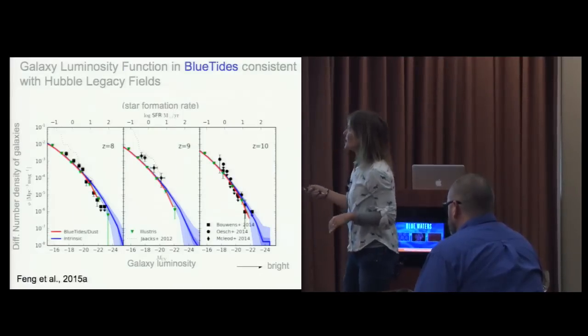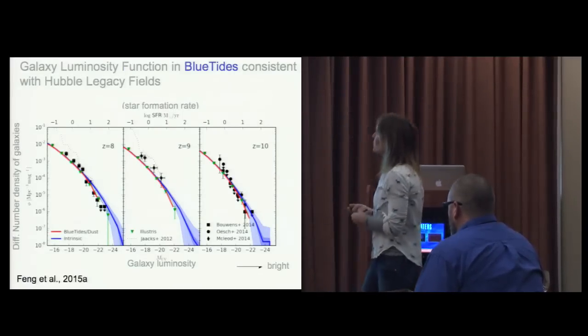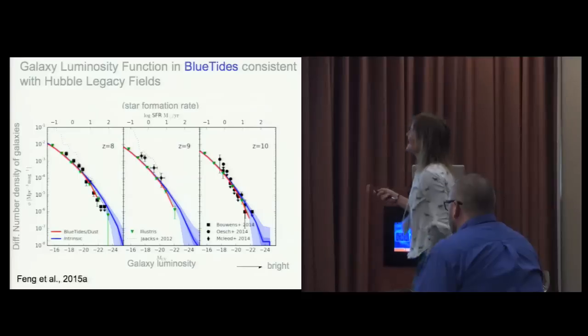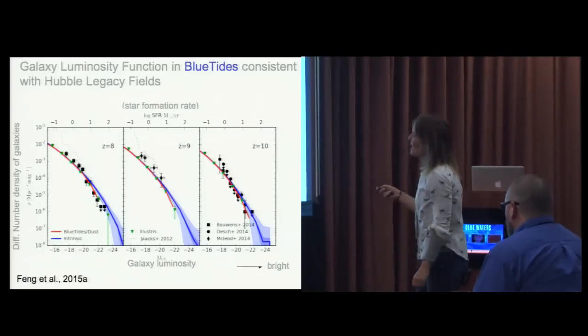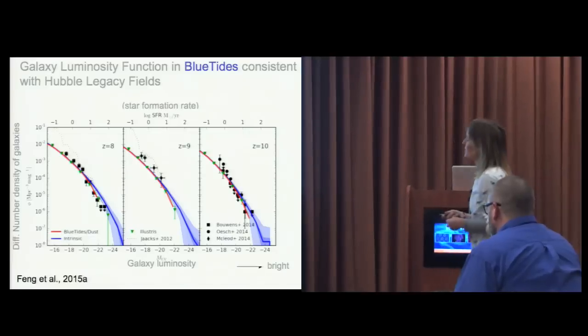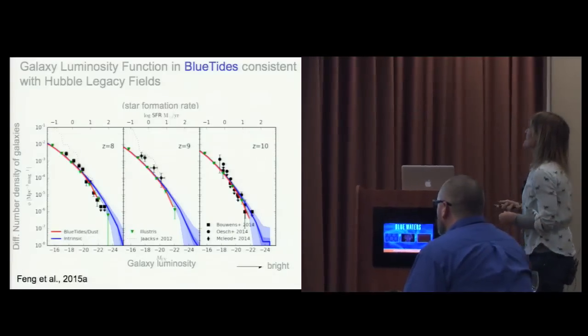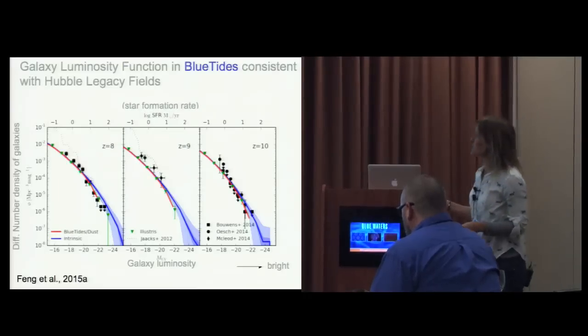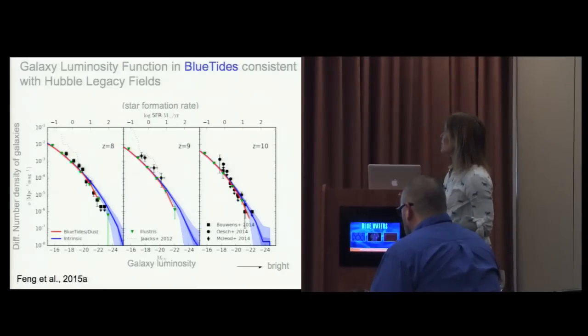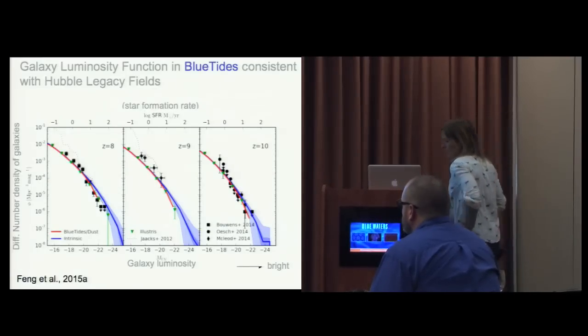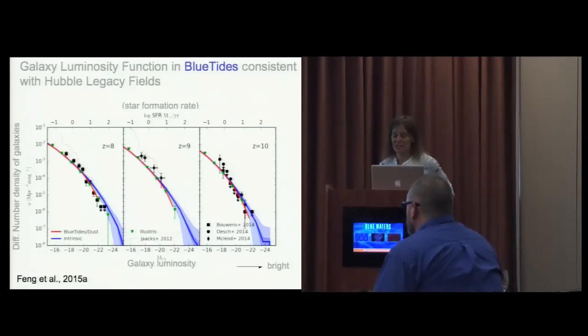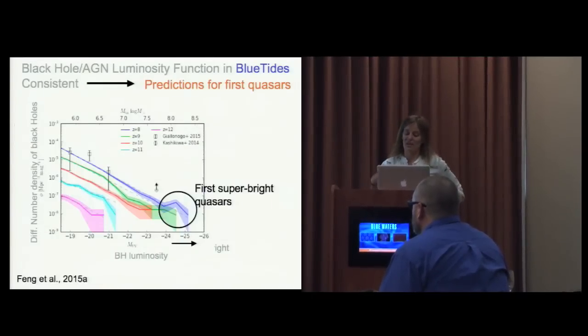These are the predictions of the Blue Waters simulation in blue and red compared to current observational constraints, these black points. What we see is some consistency, which is very promising, but also there are a lot of galaxies that are yet to be observed and discovered, particularly at the very bright end. We also have a model for quasars and black hole growth, so we can make predictions for that.